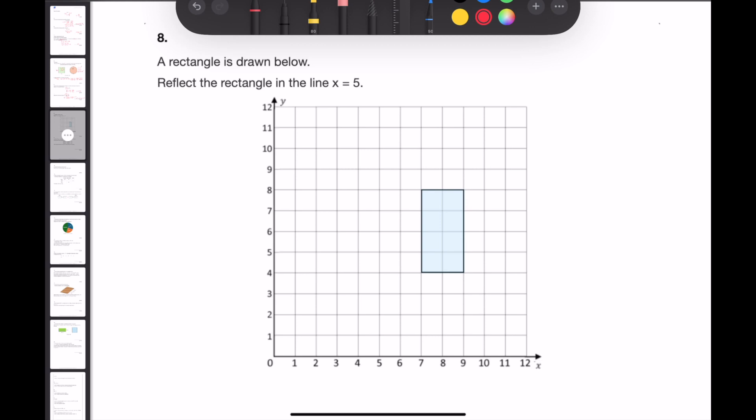Question 8. A rectangle is drawn below. Reflect the rectangle in the line x is equal to 5. x is equal to 5 is a vertical line that cuts the x axis at x is 5. Now reflecting each point in turn. This point is 2 squares away from the mirror line so it will be 2 squares on the other side. This point is 4 squares. So reflecting it means it's there. This point will now reflect here. And this point will reflect here. And now I've got my resulting shape. Here is the final answer.